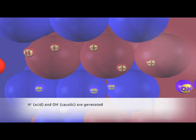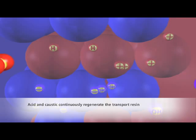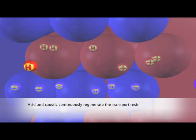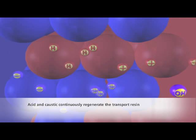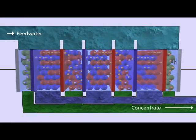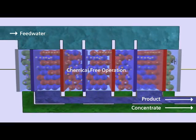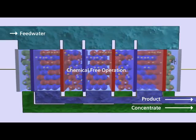The acid and caustic generated in the module regenerate the resin beads by replacing other trace ions remaining. The attachment of hydrogen and hydroxide ions to the resin beads is exactly what happens to resin beads when acid and caustic are used for regeneration in conventional deionization systems. As a result, IonPure CEDI systems do not need chemicals for regeneration. The electric potential does all the work.